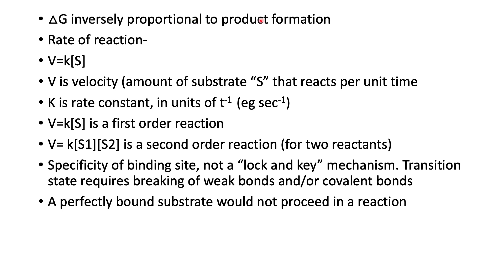Delta G is inversely proportional to product formation — the higher this number, the lower your product; the lower this number, the greater the product formation. We also talk about the rate of reaction, where V is the velocity, defined as the amount of substrate that reacts per unit time — often described as the number of molecules that transform per minute. K is the rate constant, in units of per second, usually moles per second. For first order reactions, we're looking at one mole of substrate; for second order reactions, a second substrate is involved, and these are the powers to which the concentration terms are raised.